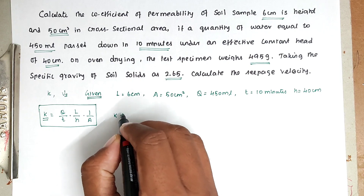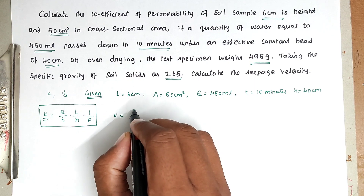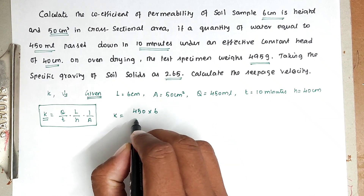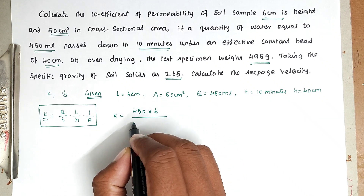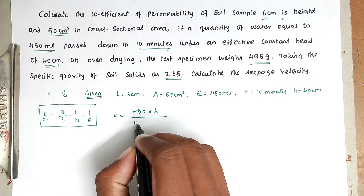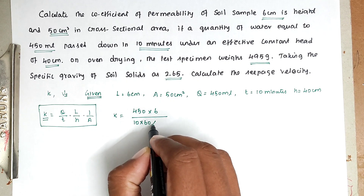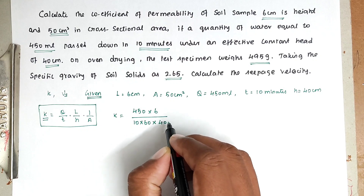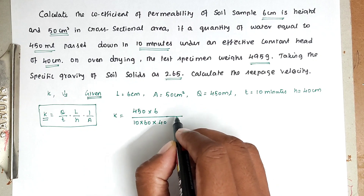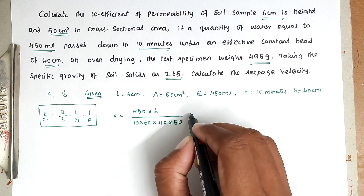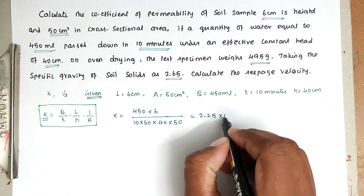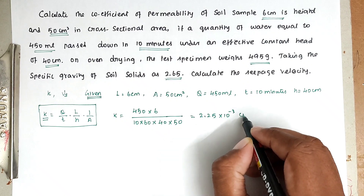Substituting the values: K = (450 × 6) divided by (10 × 60 seconds × 40 × 50). Solving this, we get K = 2.25 × 10⁻³ centimeters per second.